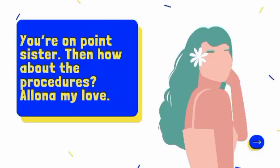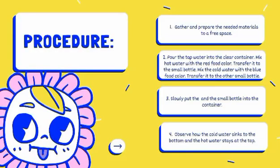Then, how about the procedures, Alyona my love? Girl, are you that blind? The first thing they did was they put the tap water onto the container. Then, they dropped the cold blue water slowly to the tap water. Thirdly, the hot red water was slowly put in the container.